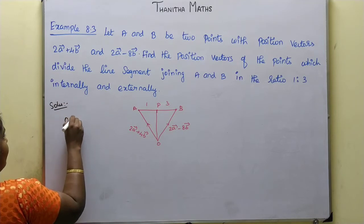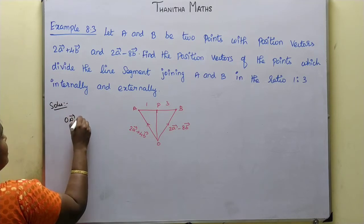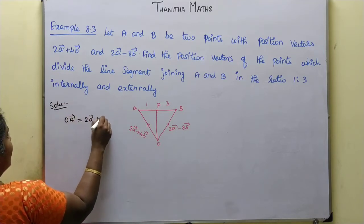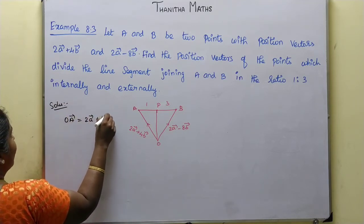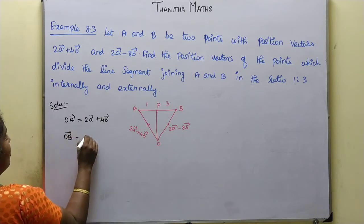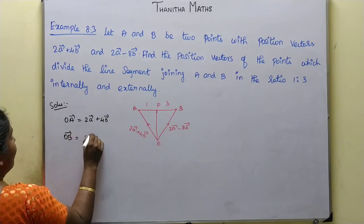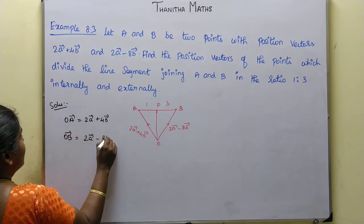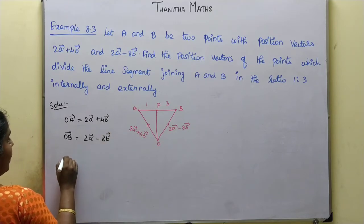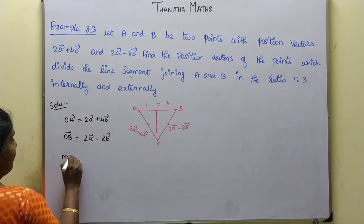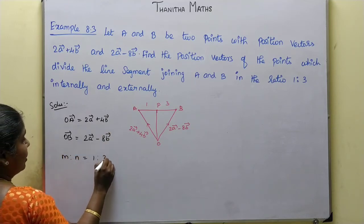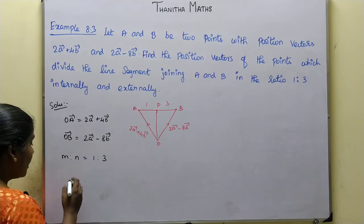OA vector is equal to 2a vector plus 4b vector, and OB vector is 2a vector minus 8b vector. So m is to n equals 1 is to 3.